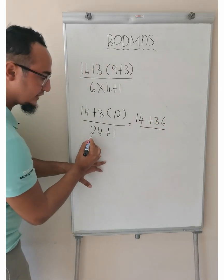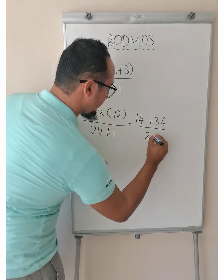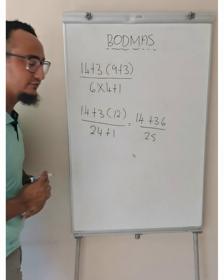3 multiplied by 12 is 36. Over. 24 plus 1 is equal to 25. Then we go a little bit further.